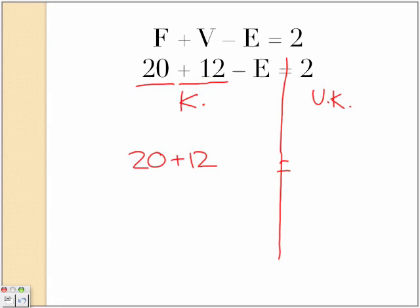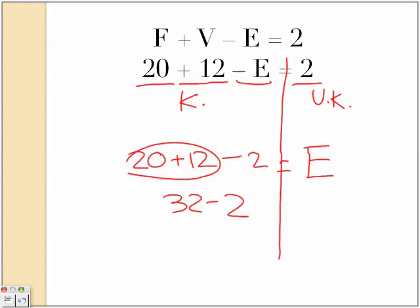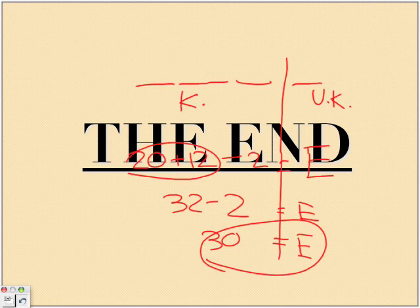So we've got that now. And we know that this equals 2, so that's a positive 2. So we put the opposite and put negative 2. And 20 plus 12 equals 32, minus 2. And 32 minus 2 equals 13. So E has to equal 30. So E, yeah, that's it.